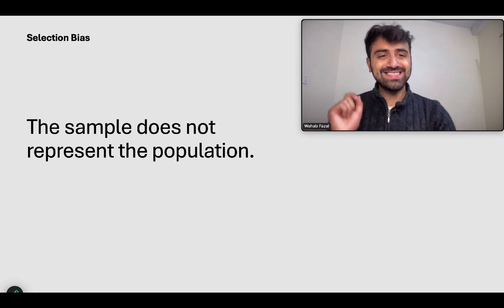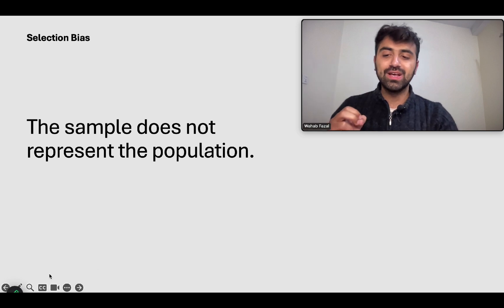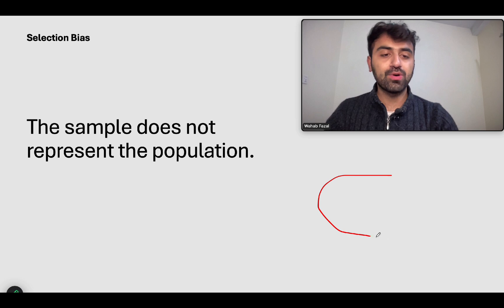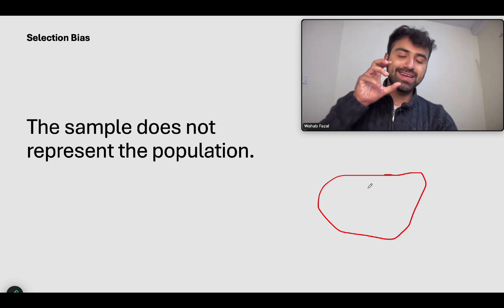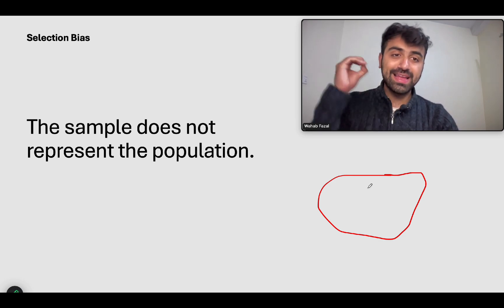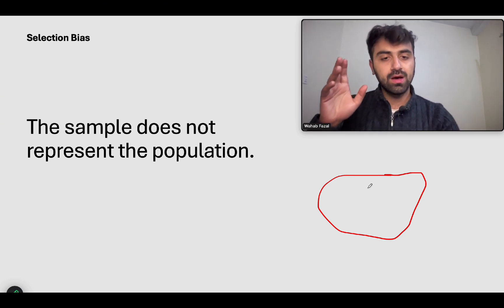So what is selection bias? Selection bias is when the sample that you choose from a population does not represent it. Let's take an example of a hypothesis. Let's say this is the continent of Asia. You hypothesize that the Asian people are super smart. You make that hypothesis.